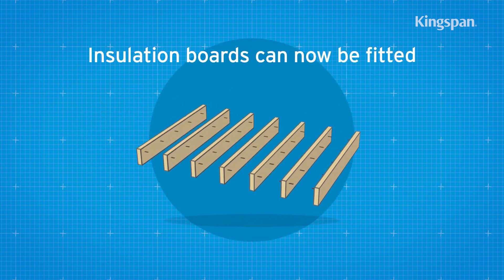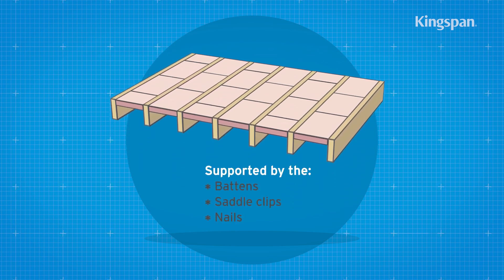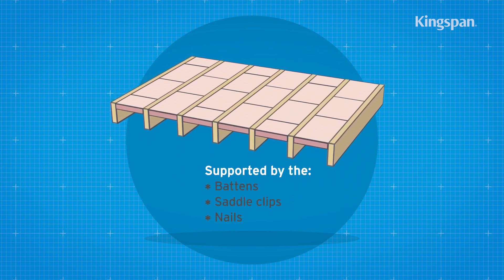The insulation boards can now be fitted between the joists so that they are supported by the battens, saddle clips, or nails.